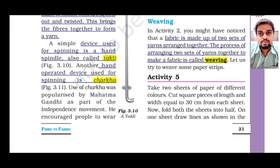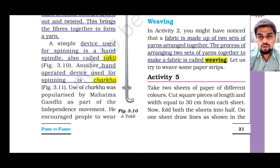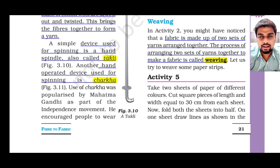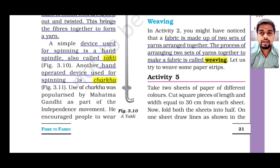Hello students, welcome to the final part of Chapter 3. I hope all of you have watched both previous parts on fiber to fabric. We have seen how fibers are separated using the process of ginning, and then converted into yarns using spinning. In today's lecture we are going to study how yarns are converted into fabric. There are two methods: weaving and knitting.